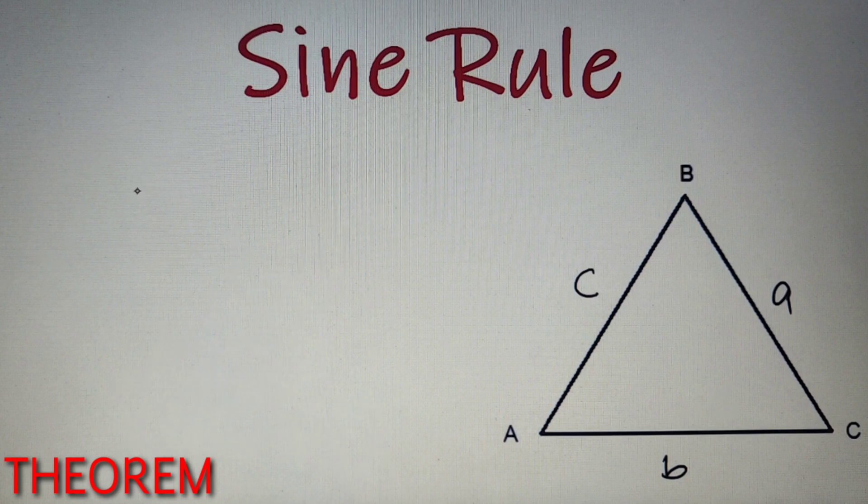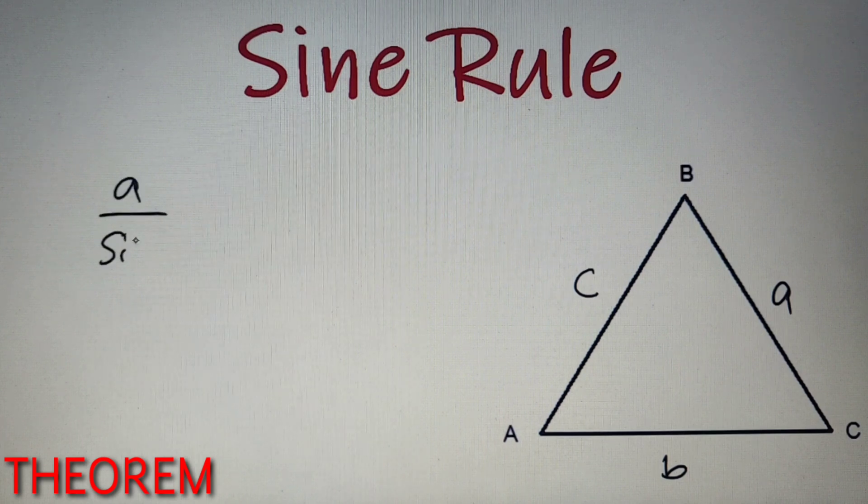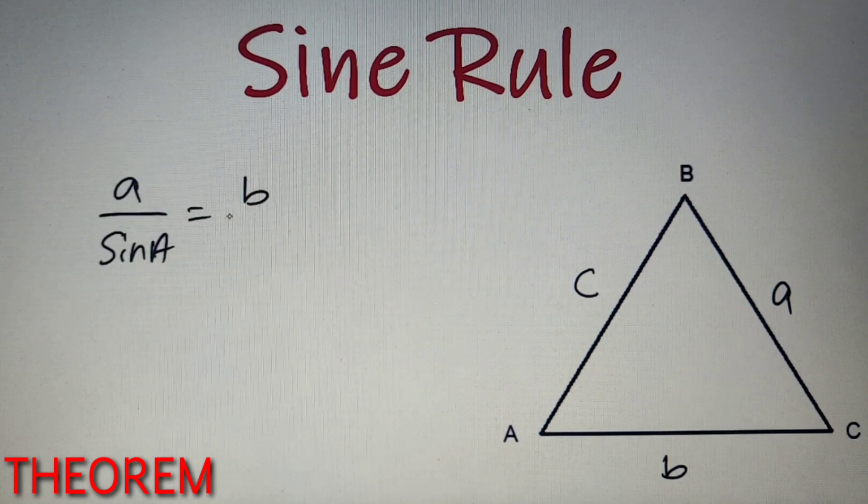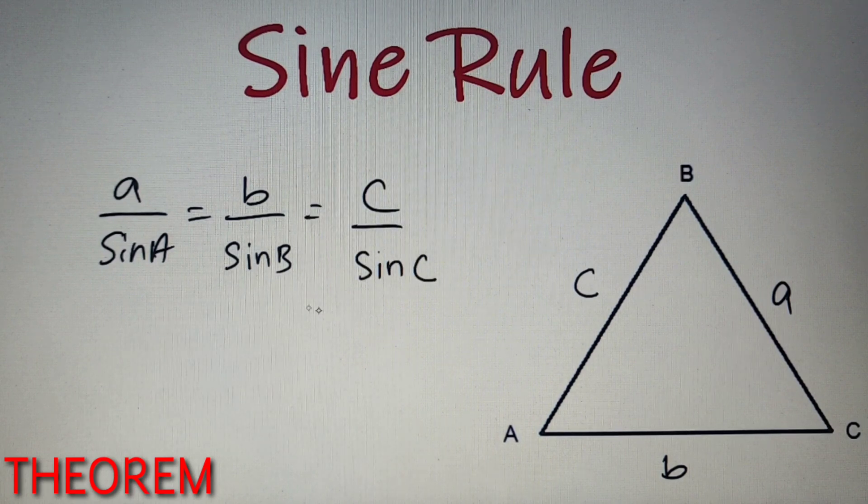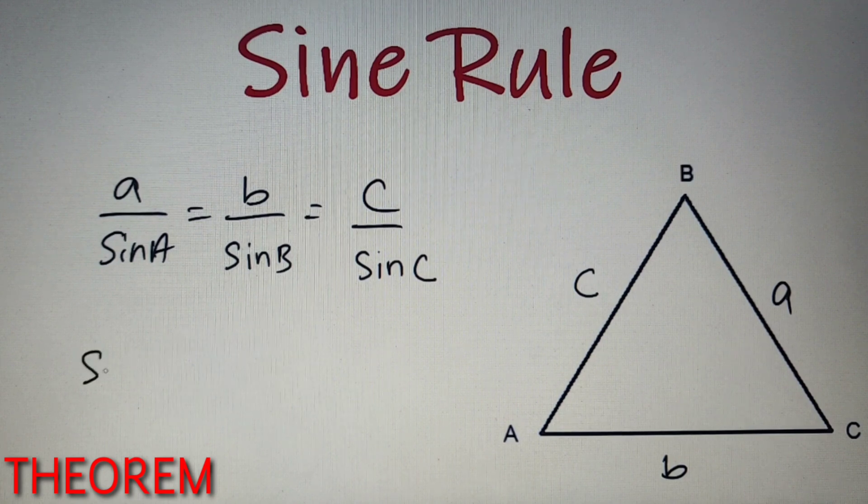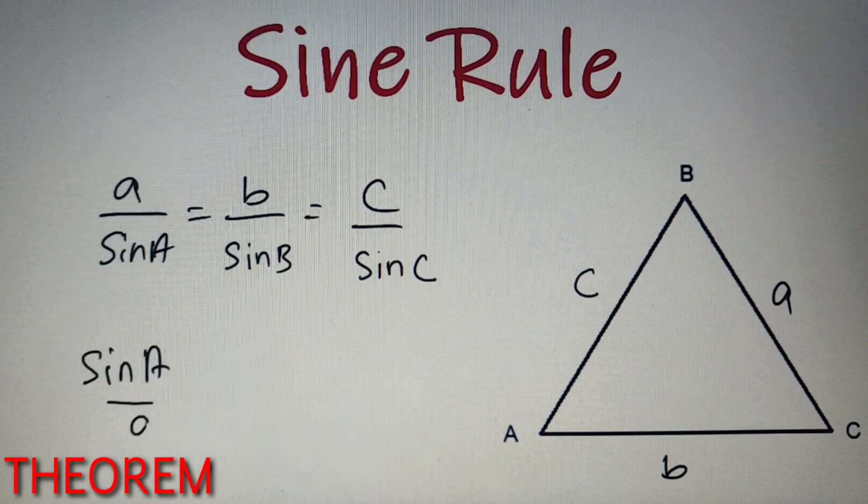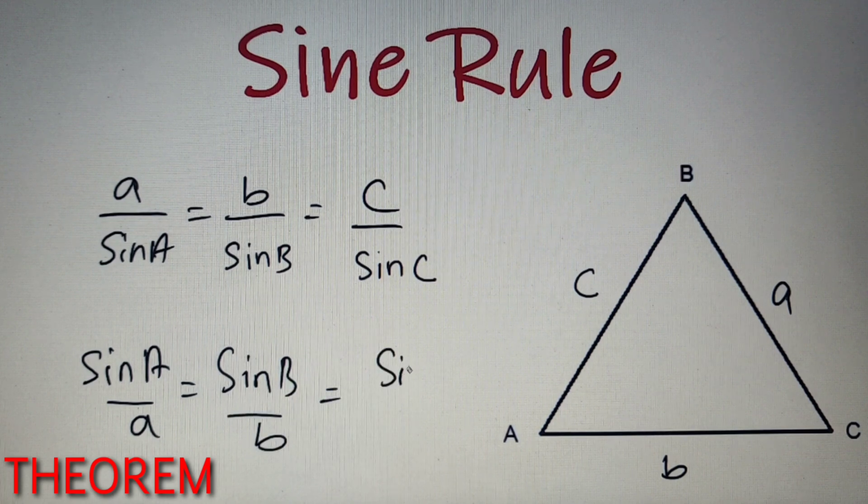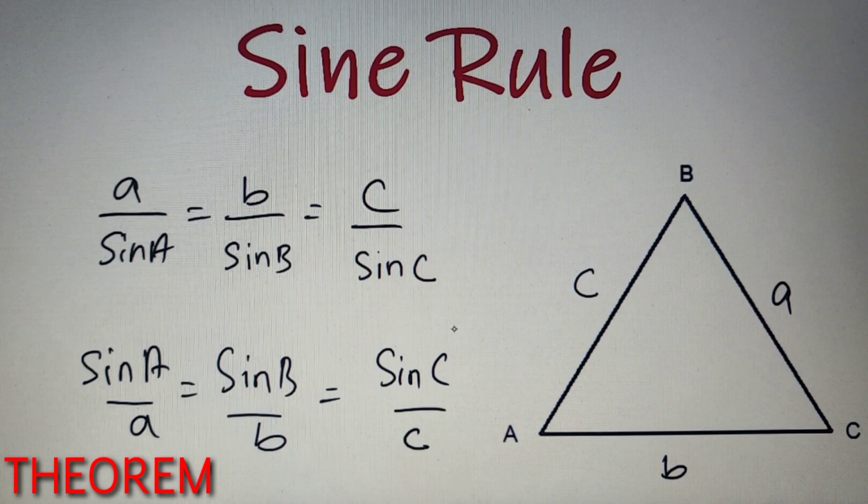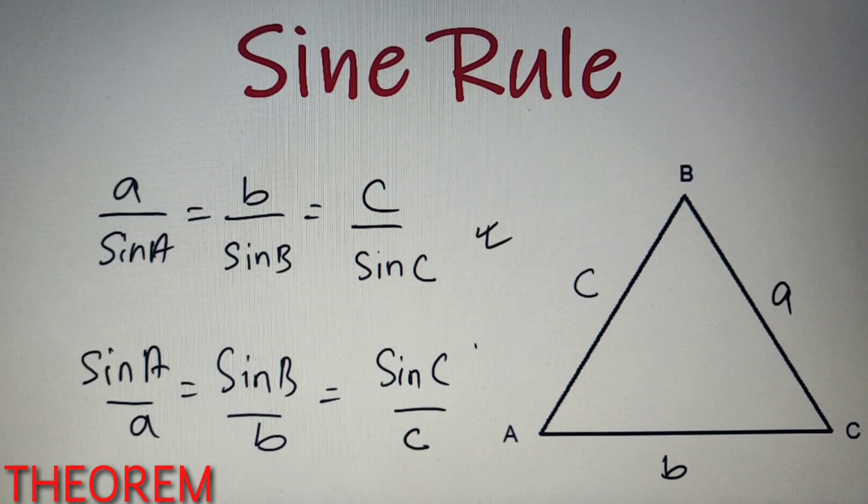According to this theorem, I can say that A by sine A is equal to B by sine B is equal to C by sine C. Now this can also be written in reverse: sine A by A is equal to sine B by B is also equal to sine C by C. So we can represent sine rule mathematically with either of these two expressions.